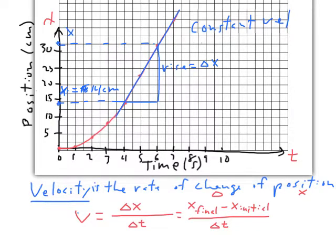When we want to know how much the rise was, change in X is calculated this way: X final minus X initial. That's going to equal 34 minus 14, equals 20 centimeters.